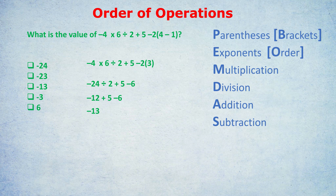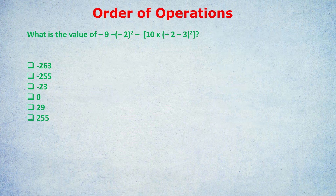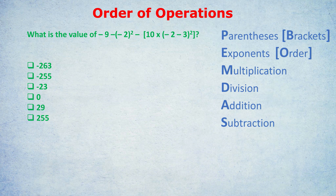Now for the final, most difficult example. Remember PEMDAS: parentheses, exponents, multiplication, division, addition, subtraction. Pause and try the question on screen — it's really difficult. Starting with brackets: on the right there are two sets — an outer square bracket and an inner bracket. Always do the inner bracket first. The inner bracket gives negative 2 minus 3 = negative 5. That's the only thing we calculate at this step — always start with the innermost brackets.